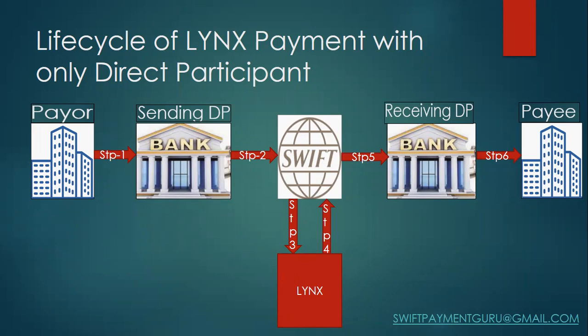As I mentioned in previous sessions, different entities can provide different facilities. For example, SWIFT provides message transfer, there can be a separate entity for clearing, and another for settlement. Here, LYNX does the clearing and settlement, but messaging services are not provided by LYNX — it relies on a third-party vendor, which is SWIFT. SWIFT is used in order to send and receive the messages.